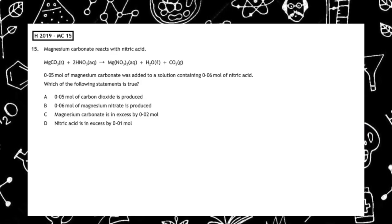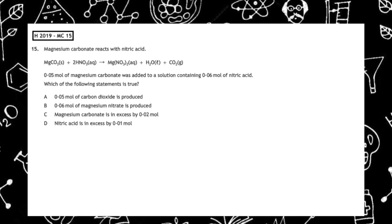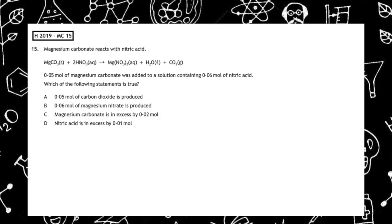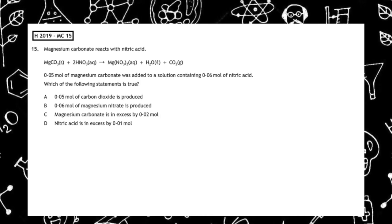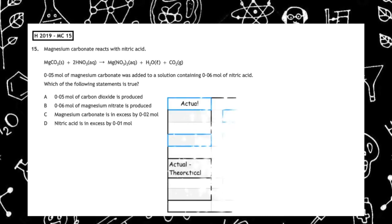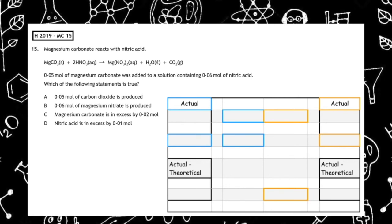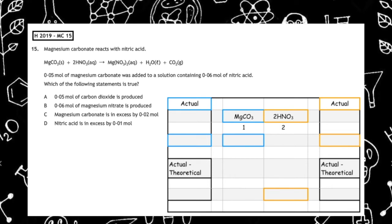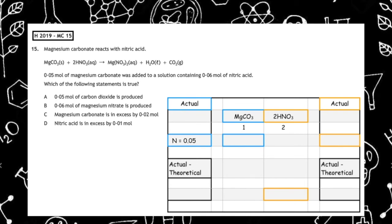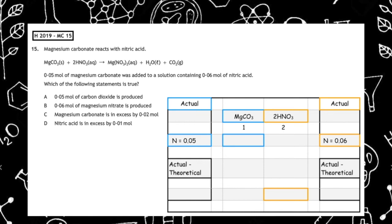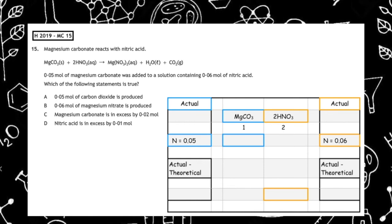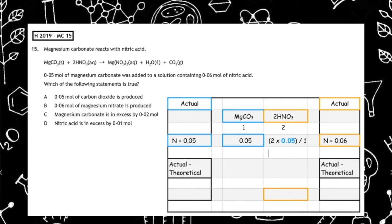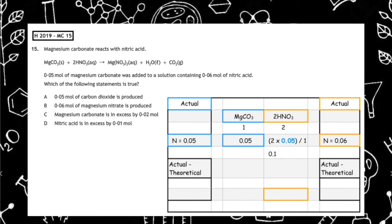This past paper question is from the Higher 2019 multiple choice question 15. Magnesium carbonate reacts with nitric acid and the balanced equation is given. 0.05 moles of magnesium carbonate was added to a solution containing 0.06 moles of nitric acid — which of the following statements is true? Because we have information about both reactants, we calculate excess. We take down our entities: magnesium carbonate and 2HNO₃, with a mole ratio of 1 to 2. The actual moles of magnesium carbonate is 0.05 and nitric acid is 0.06. Cross-multiplying: 2 times 0.05 divided by 1 equals 0.1.